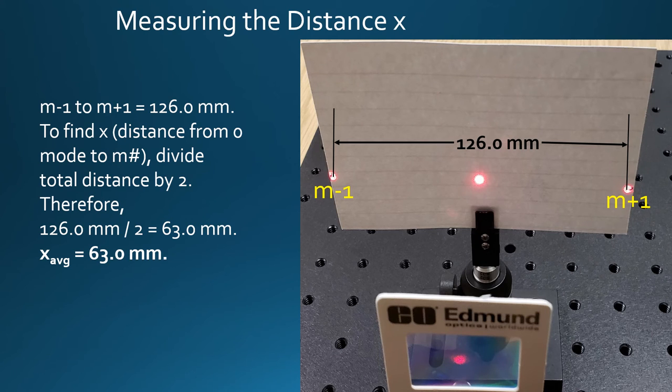As you can see by our picture, the distance from M-1 to M+1 is 126 millimeters. To find x, which is considered the distance from mode 0 to mode 1 or -1, we're going to divide that total distance by 2. Therefore, it comes out to be x average, in this case, of 63.0 millimeters.